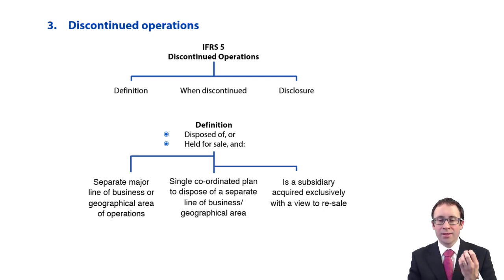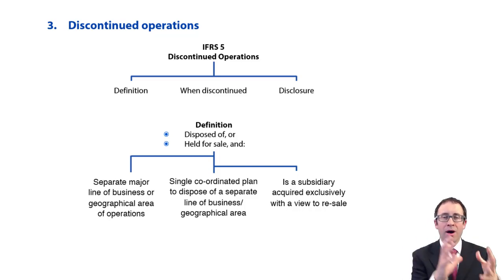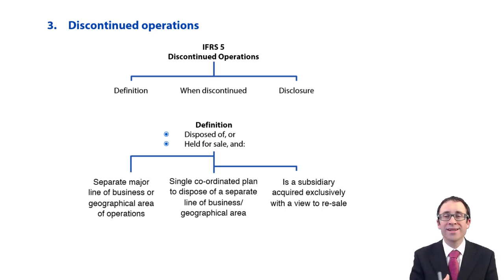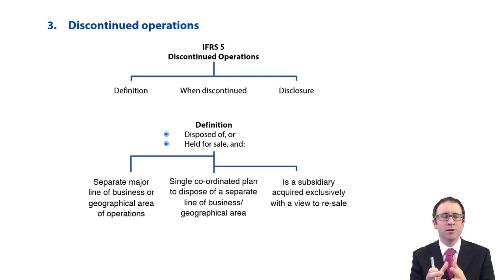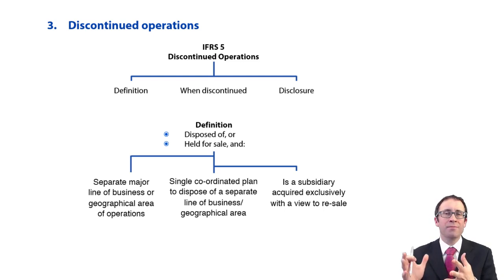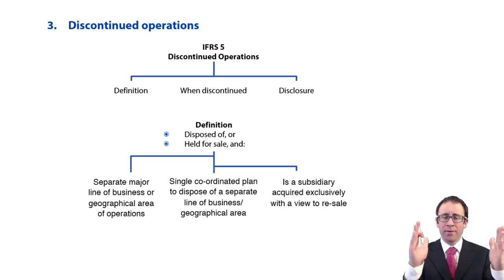In terms of it being a discontinued operation, we will either have disposed of it — so it's gone, we've sold that part of the business — or it is held for sale, meaning we've made the decision to dispose of that part of the business. The reason why we look at it from two perspectives is because before this standard came into existence we only really made the disclosures once something had been sold, and businesses don't just sell like that — they sell over a period of time.